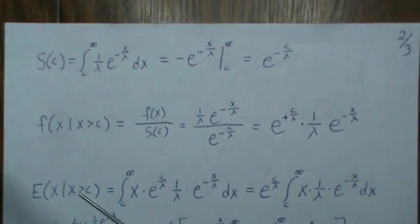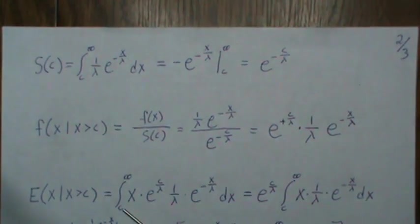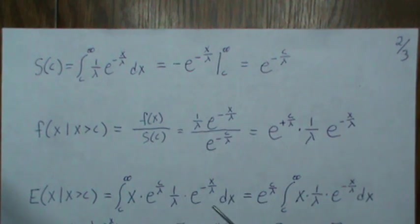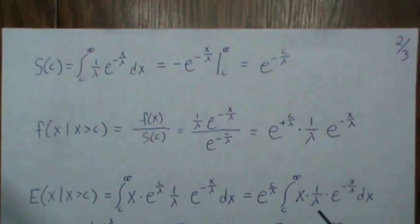So when we find the expected value of X we just integrate over the range of our density, put in an X times our density dx, and then we can pull this constant out front and we get this.